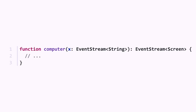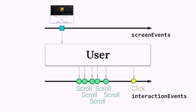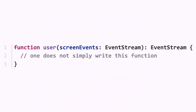All event streams have this listen method — kind of like addEventListener for clicks. The user function does the opposite: it takes screen events as input and generates interaction events as output. But how do you write this in JavaScript? We would need your brain for that, so no can do.